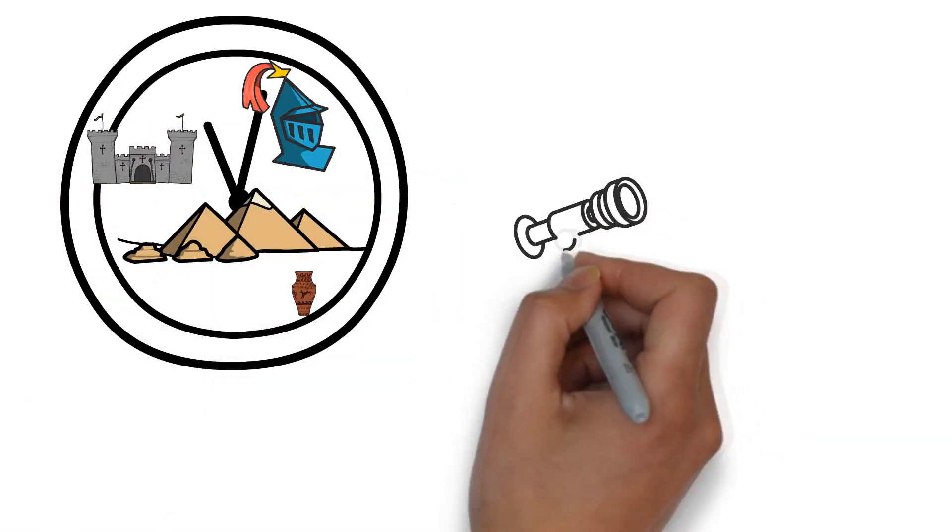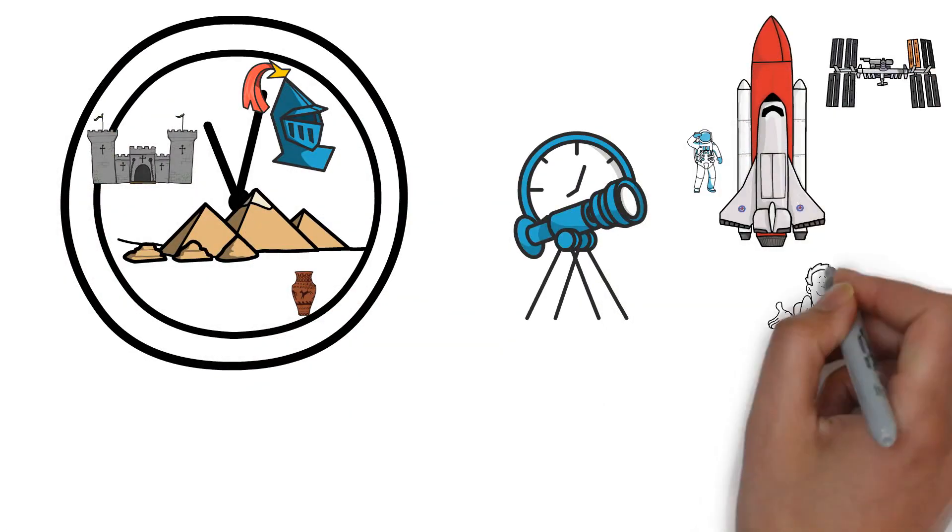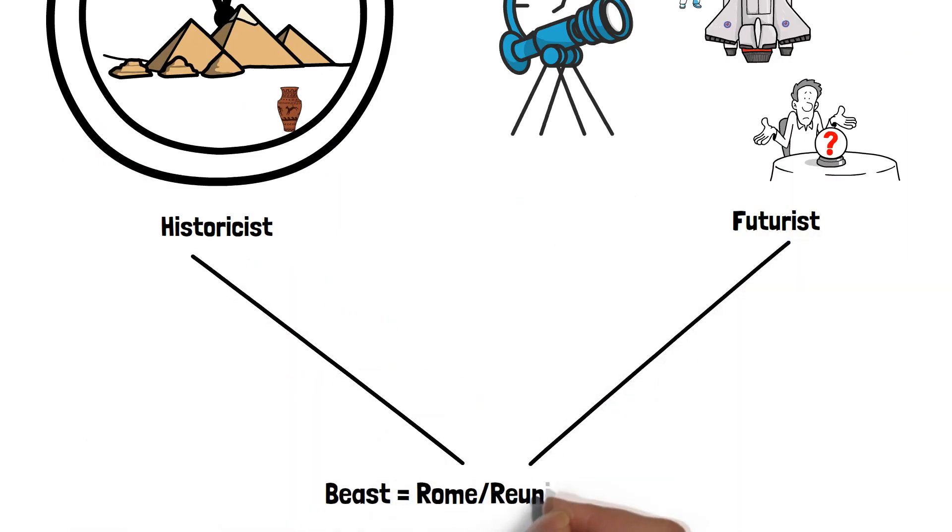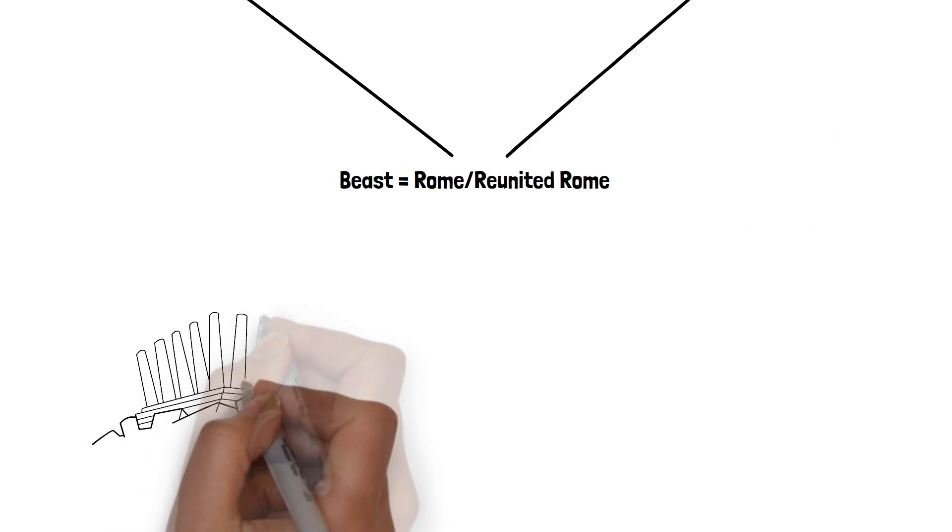Most theologians today, whether historicists or futurists, are committed to the belief that the Beast of Revelation symbolically represents Rome, or at least a reunited Rome.